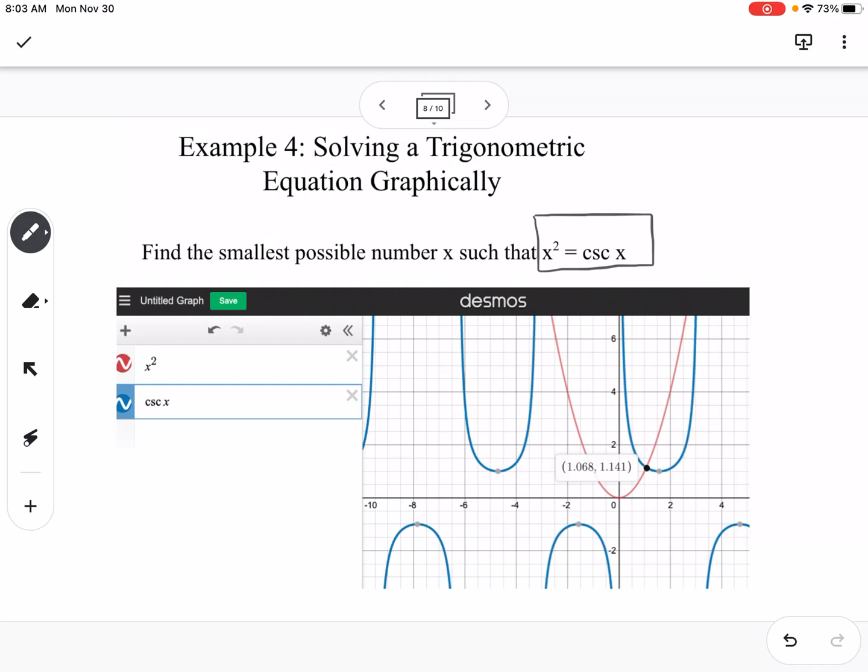Then what we would do is we would find the intersection point that gives us the lowest value of x, so that would be, we would say that x is approximately 1.068.